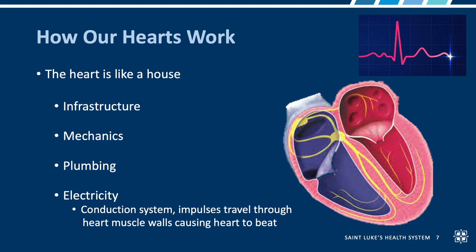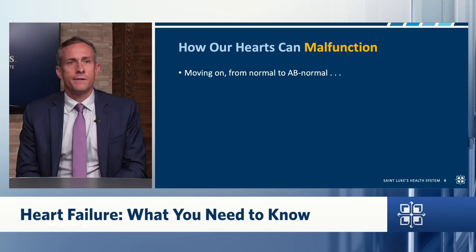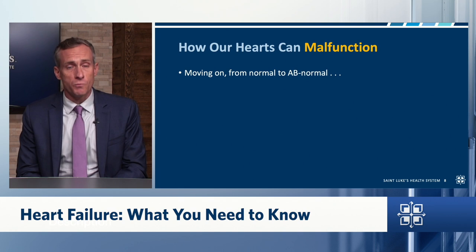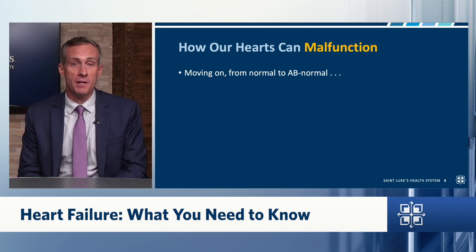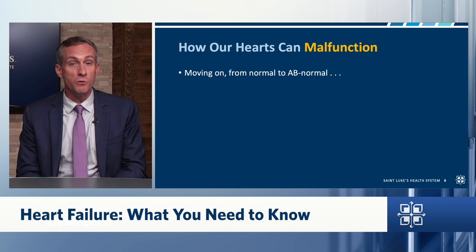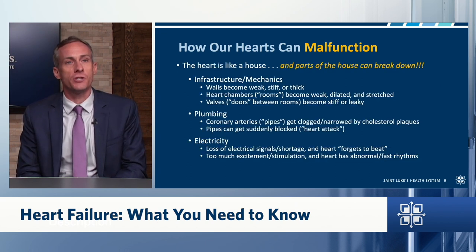The EKG, ECG, or electrocardiogram that you often get done when you go to the doctor — you can see a version of an ECG tracing in the upper right of this slide — is a way that we can look at that electrical conduction system. We read these EKGs kind of like we read a map, and we can look for patterns that tell us about abnormalities in that conduction system. Now that we've gone through how our hearts work normally, we're going to move on to how our hearts can malfunction — or as my medical school professor would say, we're going to move from normal to abnormal function.